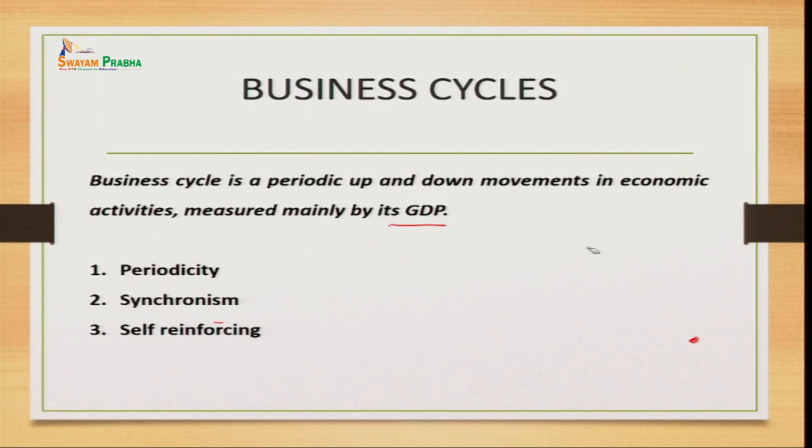To summarize the three features: periodicity refers to the time frame after which upward and downward movements take place; synchronization helps us understand the interdependence of various sectors of the economy; and self-reinforcing helps us understand why we are enforced to be part of that phase and how it pushes the economy towards the upper or lower side. Now let us move to the phases of business cycle.